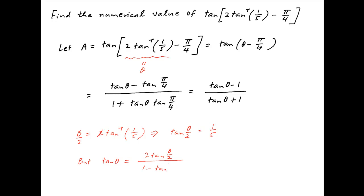Now recall that tan θ equals 2·tan(θ/2) divided by 1 minus tan²(θ/2). Substituting tan(θ/2) = 1/5, we get 2 times 1 upon 5 divided by 1 minus 1 upon 25, which equals 2 upon 5 divided by 24 upon 25.